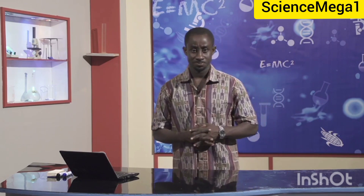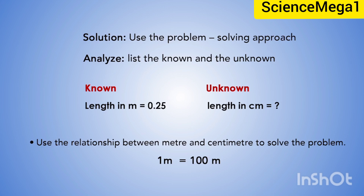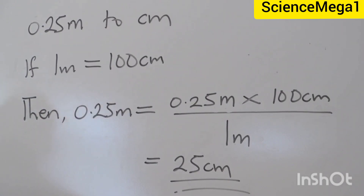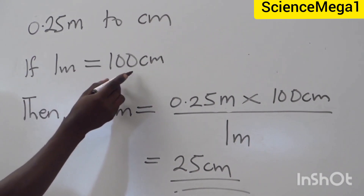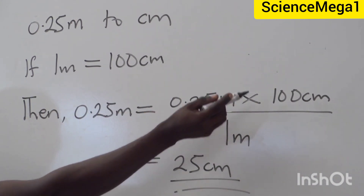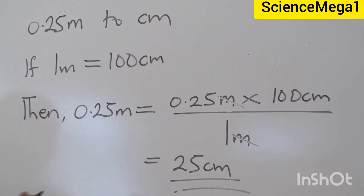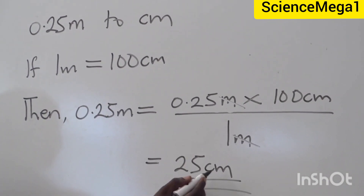Now let's look at another example. The height of a plant from the ground is 0.25 meters. What is the height in centimeters? The question requires us to convert 0.25 meters to centimeters. We know that 1 meter is equal to 100 centimeters. Then 0.25 meters multiplied by 100 centimeters divided by 1 meter gives a final answer of 25 centimeters.